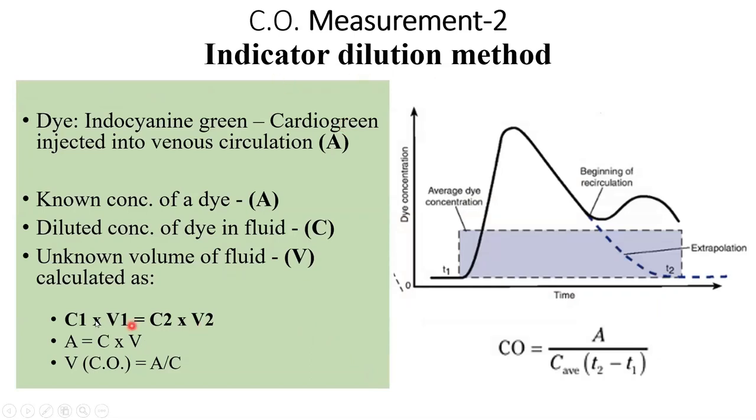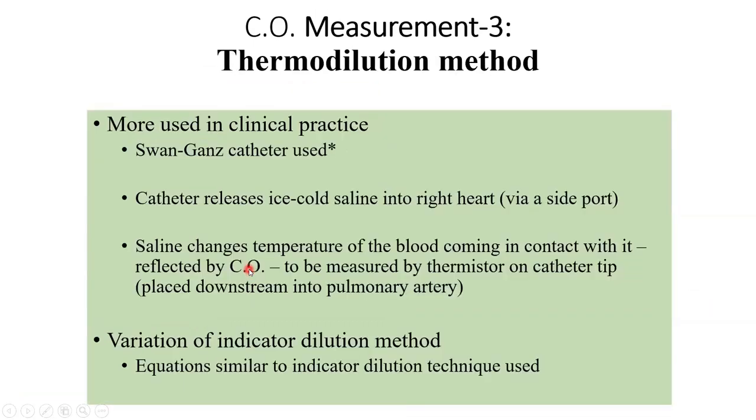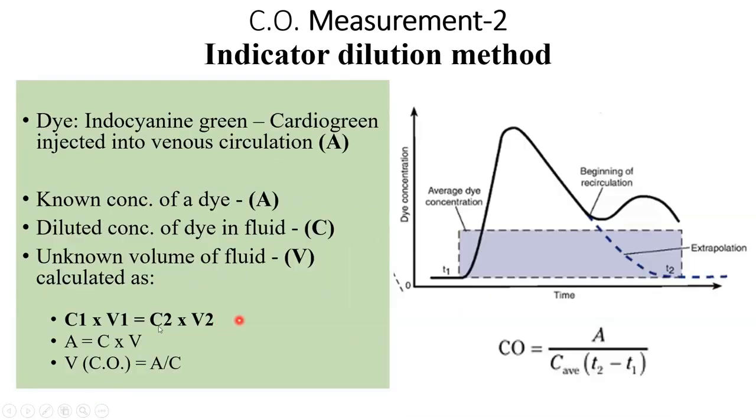The indicator dilution method equation forms the basis for many biological and chemistry equations. Here we will use this equation to derive a cardiac output value. The dye in this case is indocyanine green.